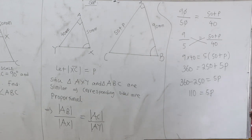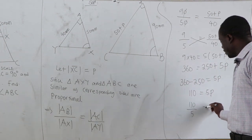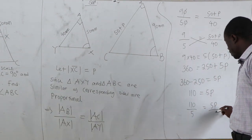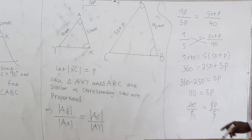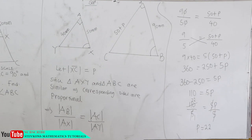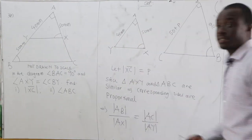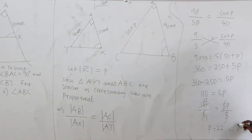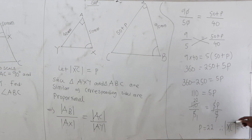We divide both sides by 5: 110 over 5 equals P. 5 goes into 110 giving 22, so P equals 22. The question asks us to find XC, and XC is the same as P. Therefore XC equals 22 mm.